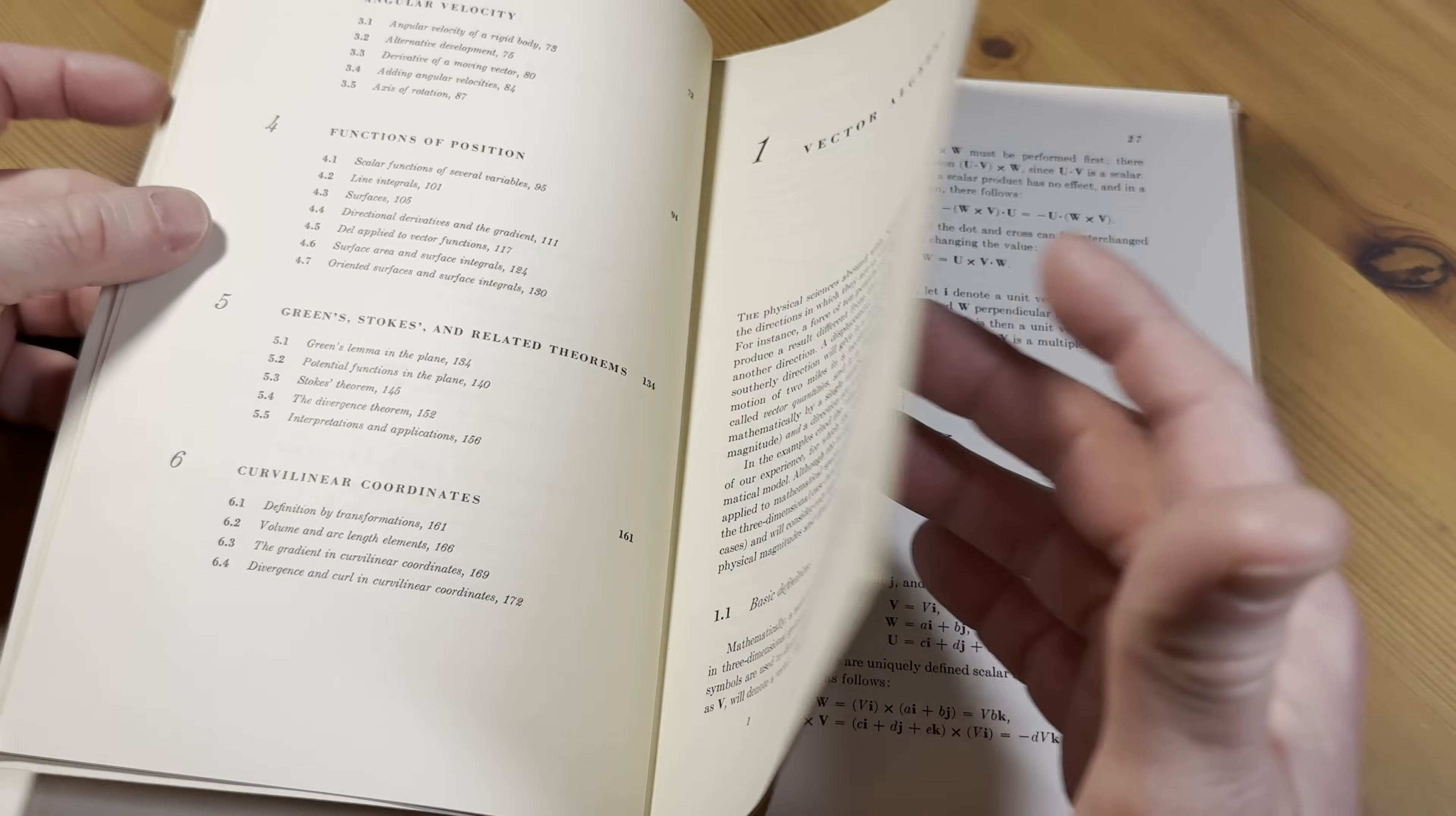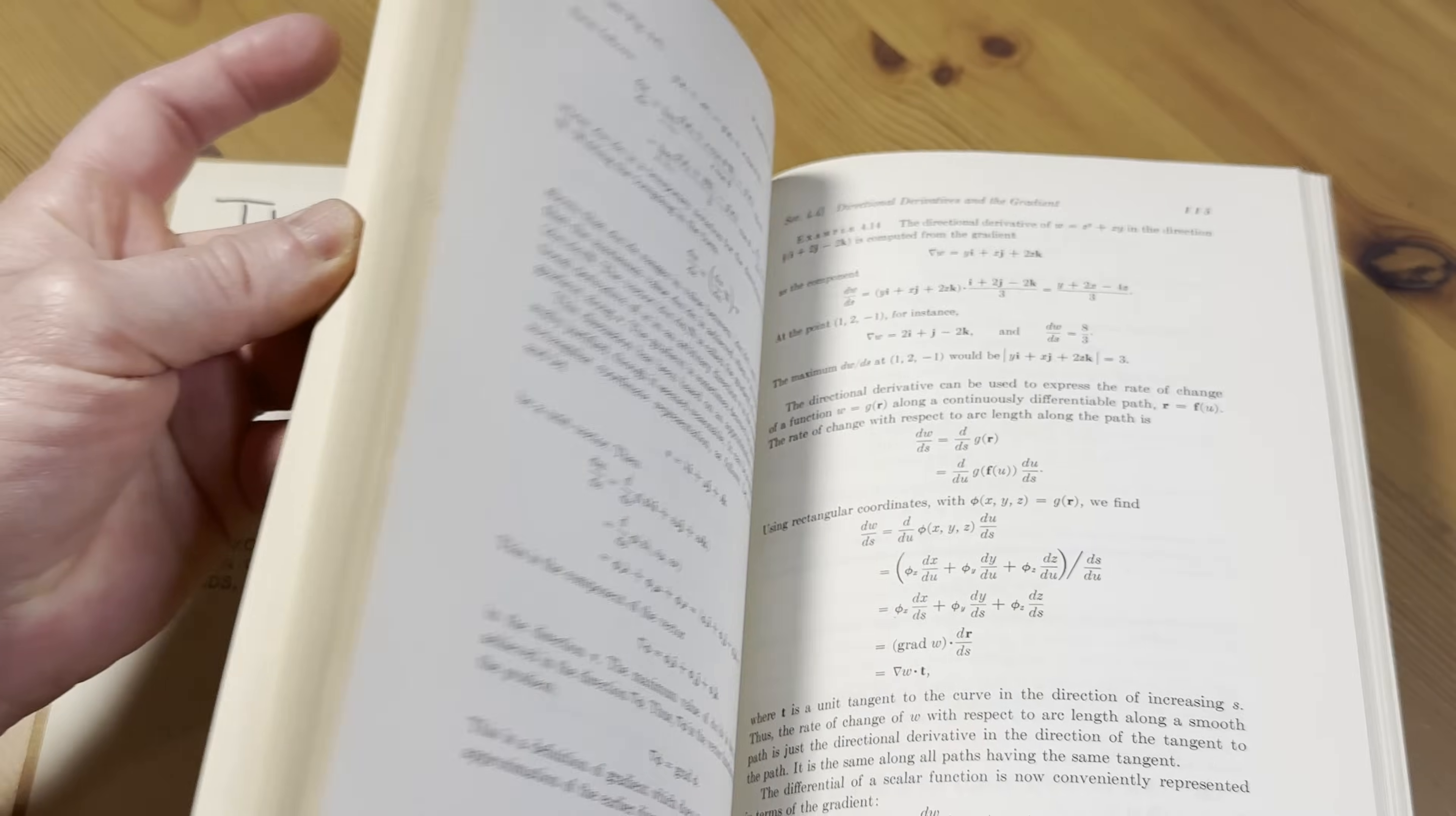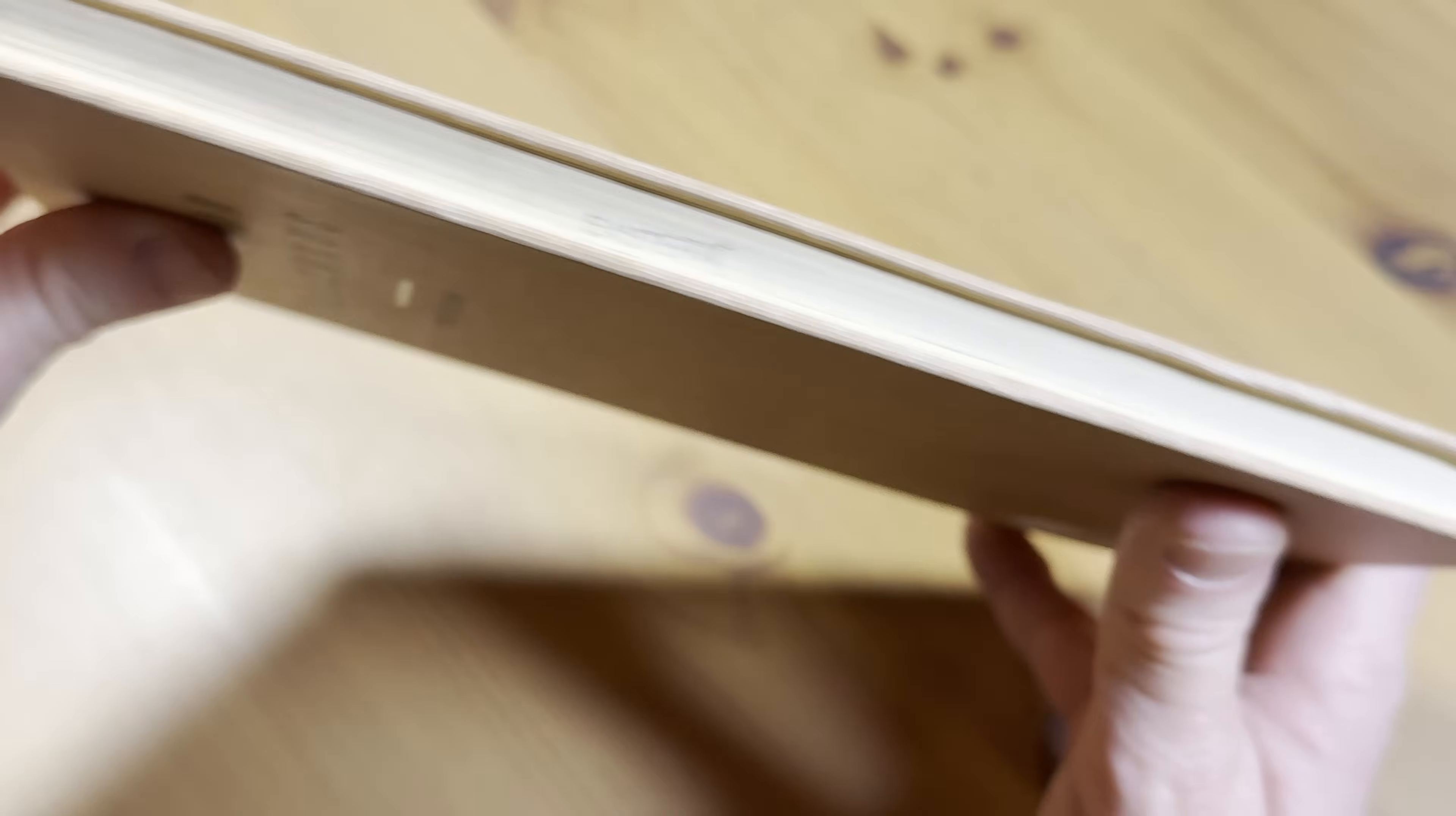But again there are things in Calc 3, like I don't think this has Lagrange multipliers. Let's look. Yeah there's no Lagrange multipliers in here. That's something you'll learn in Calc 3. So there's a lot of topics, probably a lot of applications that are in a Calc 3 course that you won't find in this book. But you can find all kinds of hidden gems in this little book.